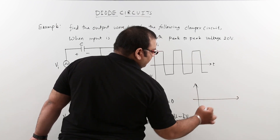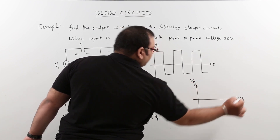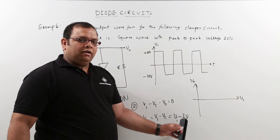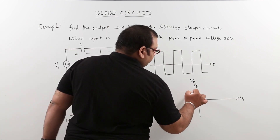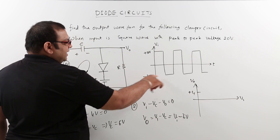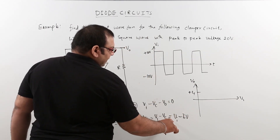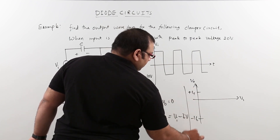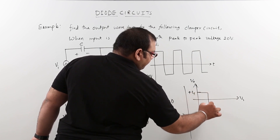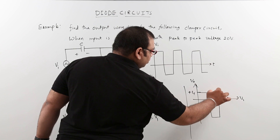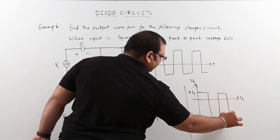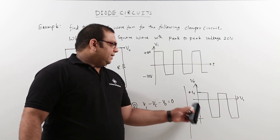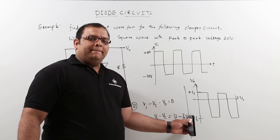Taking the output waveform: when Va is +10V, the output equals 10 minus 6, which is +4V. When Va is -10V, the output equals -10 minus 6, which is -16V. So the positive peak is +4V and the negative peak is -16V. The output waveform still has a peak-to-peak value of 20 volts, but the waveform is level-shifted so that the positive peak is +4V and the negative peak is -16V.